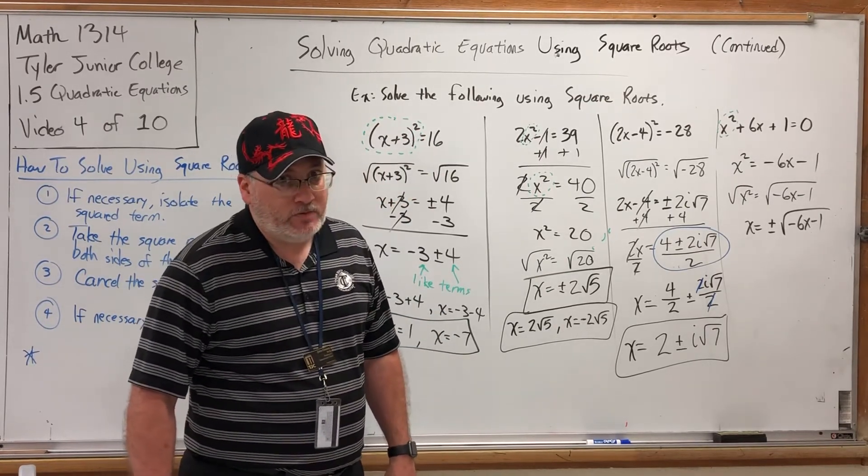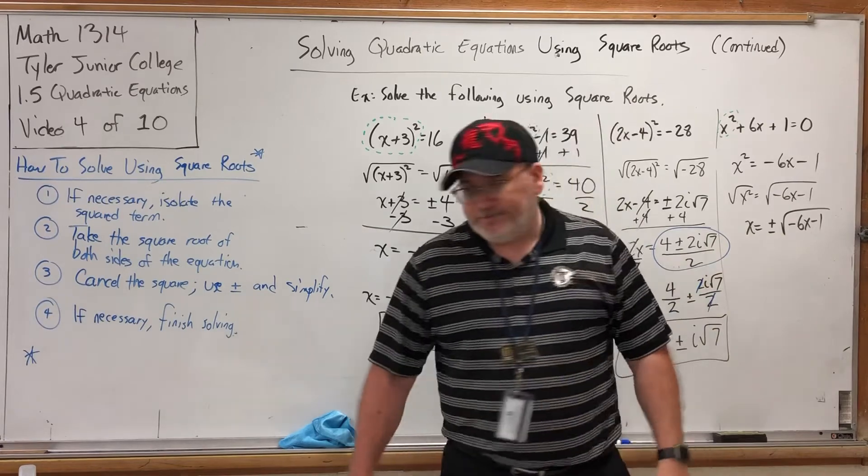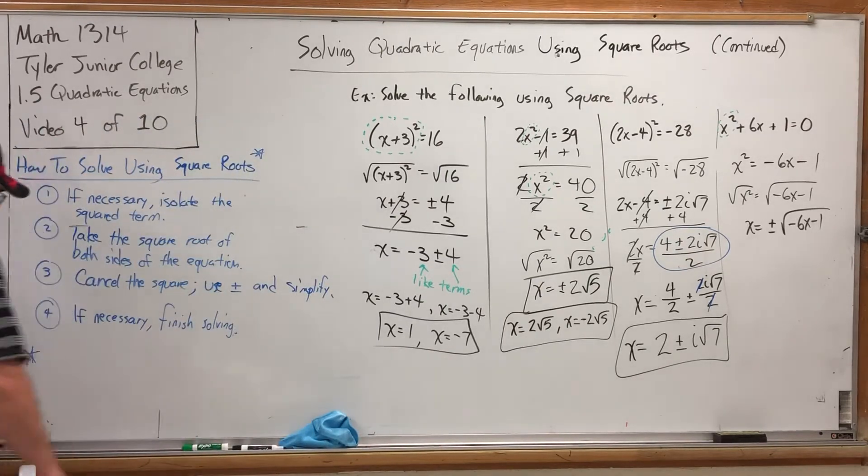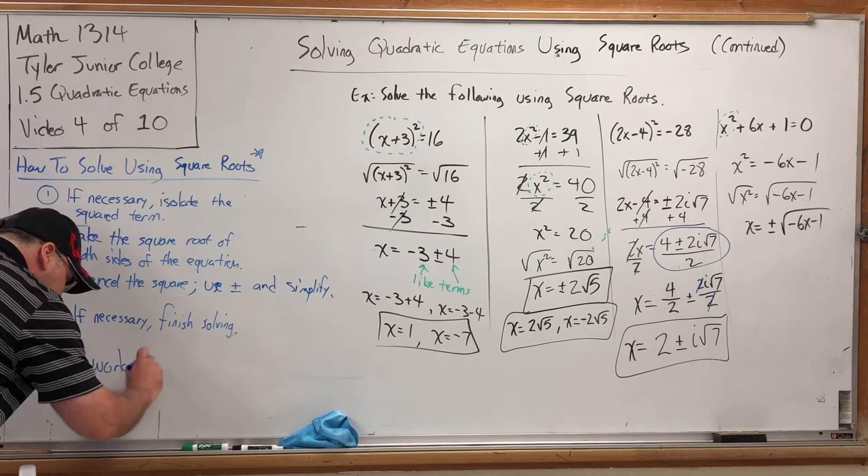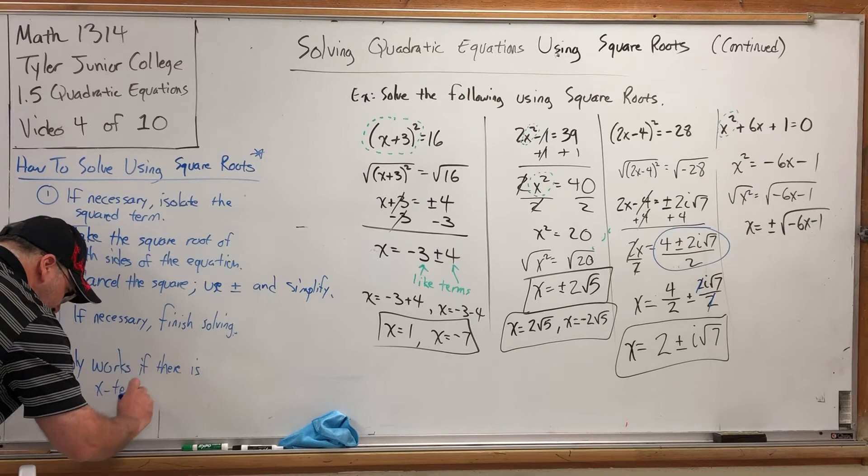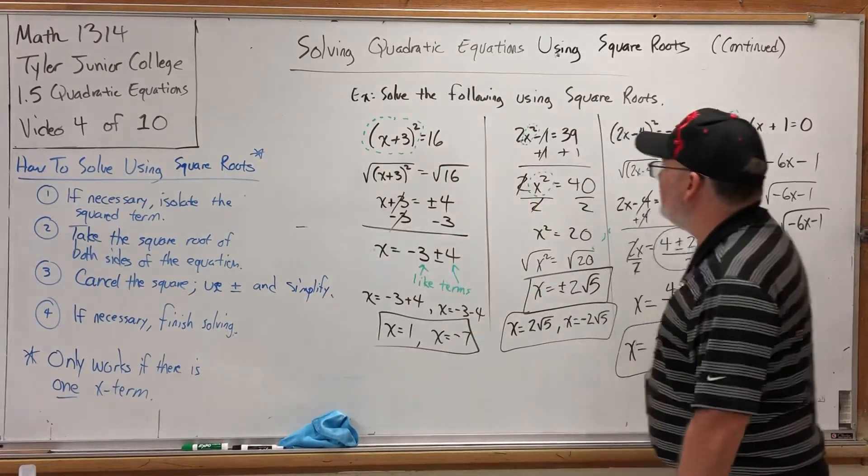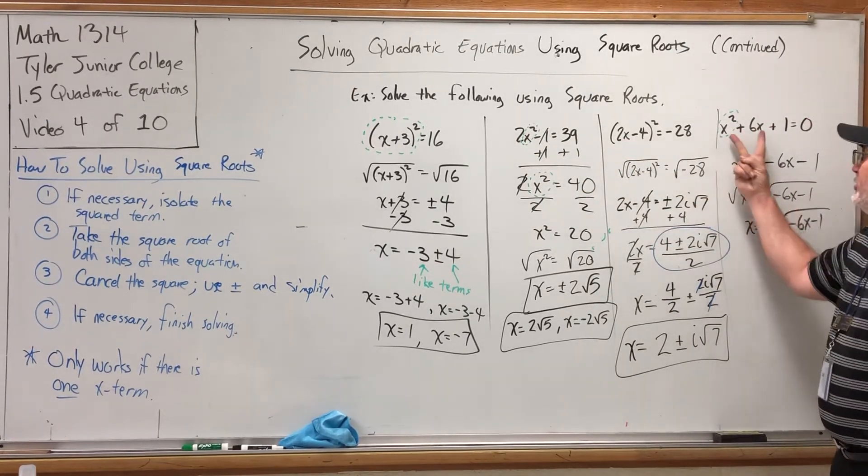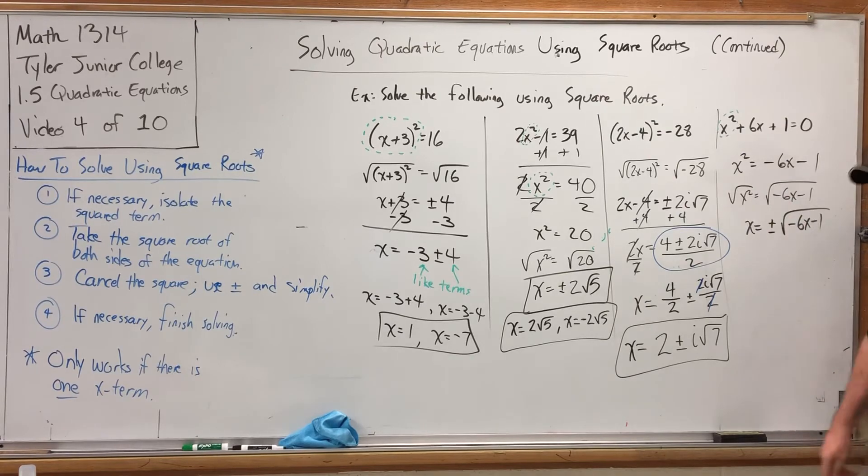Answer: there were multiple x terms. By having multiple x terms, one with the square, one without, the one without is destined to get trapped into the square root. Which brings me to the asterisk. How to solve using square roots? Asterisk. Only works if there is one x term, or whatever the variable is. This first equation had a single x term. The second equation had a single x term. The third equation had a single x term. But the fourth one had two x terms. They were not like terms, I could not combine them to make it one. And so by solving for one, it traps the other.